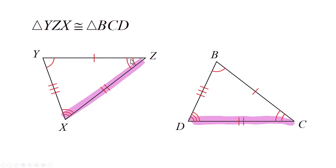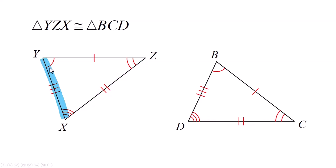Angle Z is two marks, so you're going from the two to the three. Over here you're also going from the two to the three. If we go from Y to X, we are moving from the one-mark angle to the three-mark angle, so we have to go from the one-mark angle to the three-mark angle — that would be B to D. This is going to help you later when they turn the triangles around, upside down, and twist them.